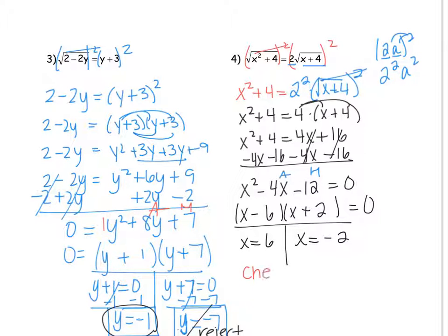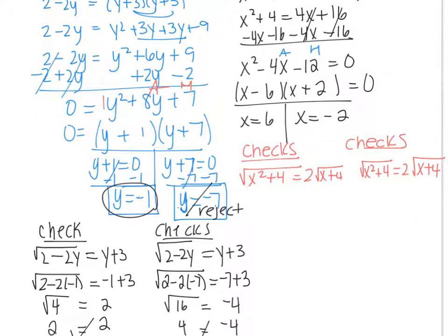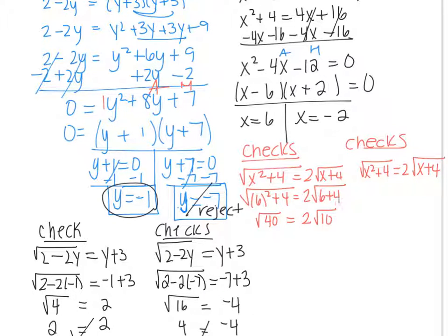Now let's try the checks. I'll rewrite the original equation and substitute our answers. For x equals 6: 6 squared plus 4 is 40, so the square root of 40. And 2 times the radical of 6 plus 4 is 2 radical 10. Now if you break down the square root of 40 into 4 times 10, that's 2 radical 10. So these are equal — x equals 6 works.